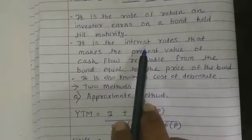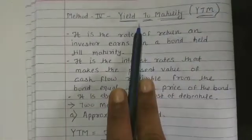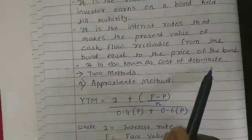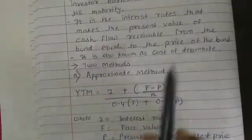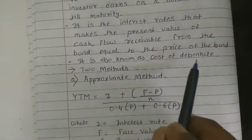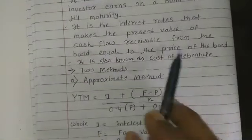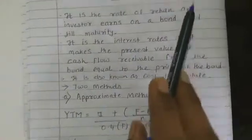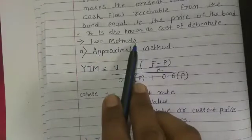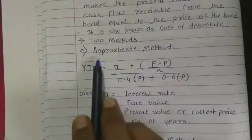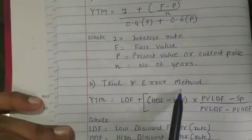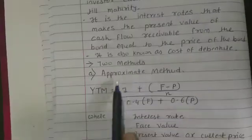YTM is also known as cost of debenture. In case of valuation of bond, it is also known as cost of the debenture. Now this YTM method can be calculated with the help of two methods: the first is the approximate method, and the second is the trial and error method.